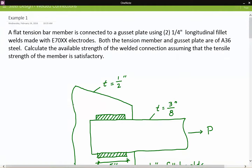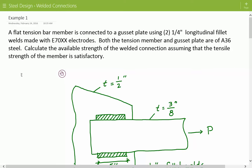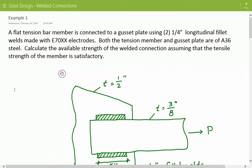Hey everybody, this is example number one in the steel design for welded connections. The problem statement is: a flat tension member is connected to a gusset plate using two quarter-inch longitudinal fillet welds made with E70X electrodes. Both the tension member and the gusset plate are of A36 steel. Calculate the available strength of the welded connection, assuming that the tensile strength of the member is satisfactory.